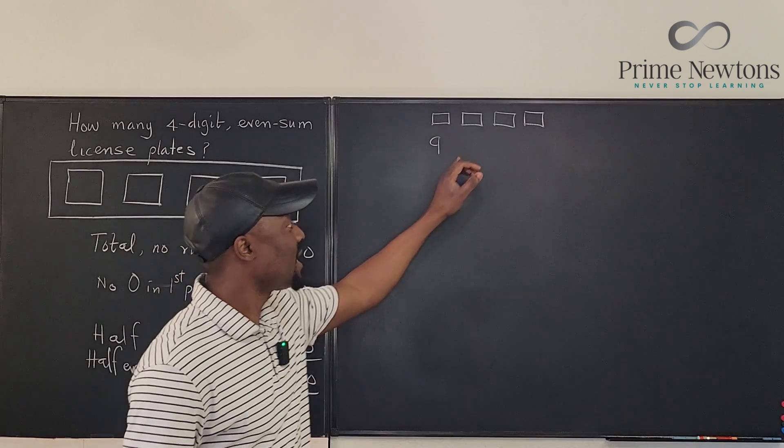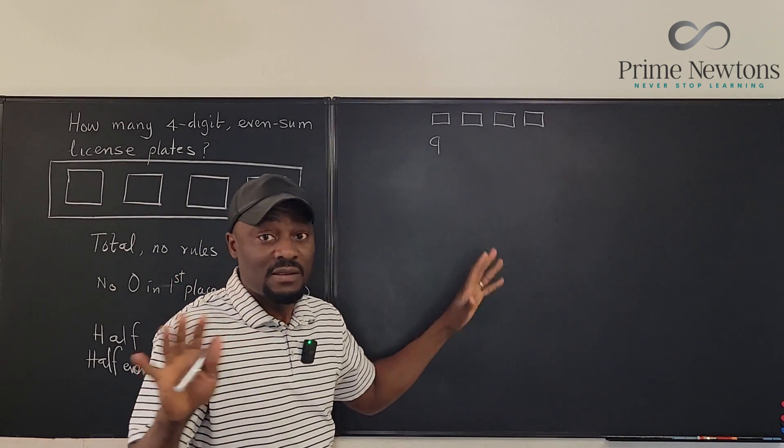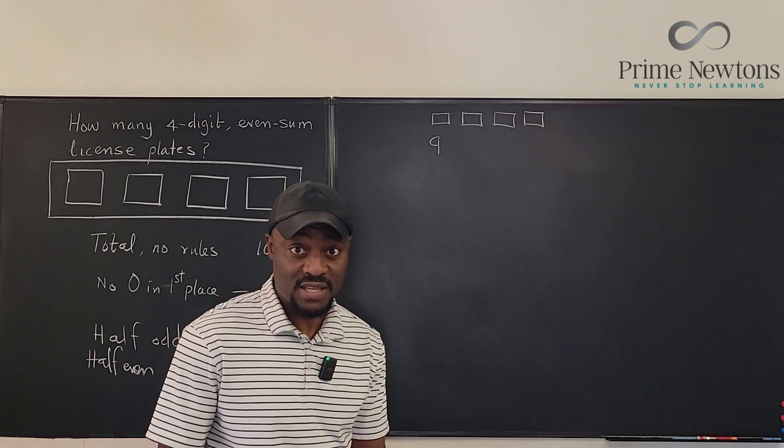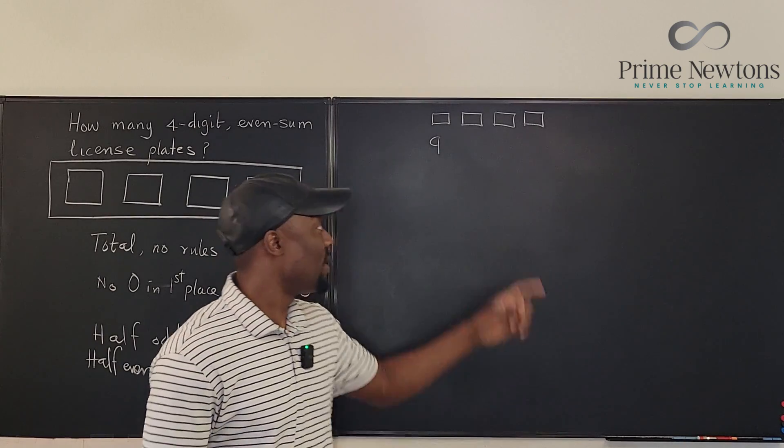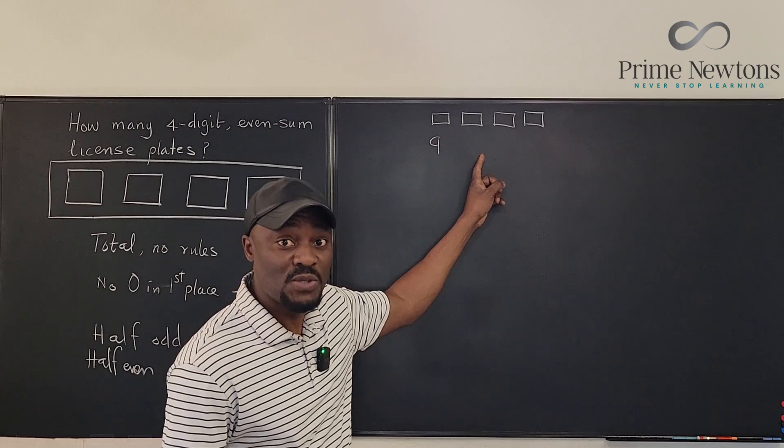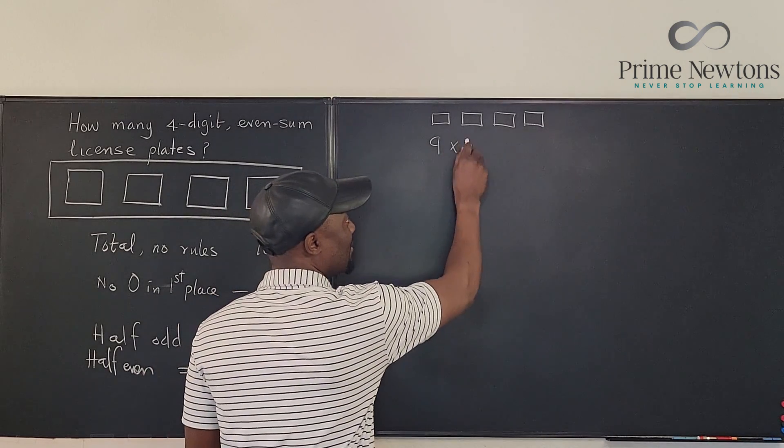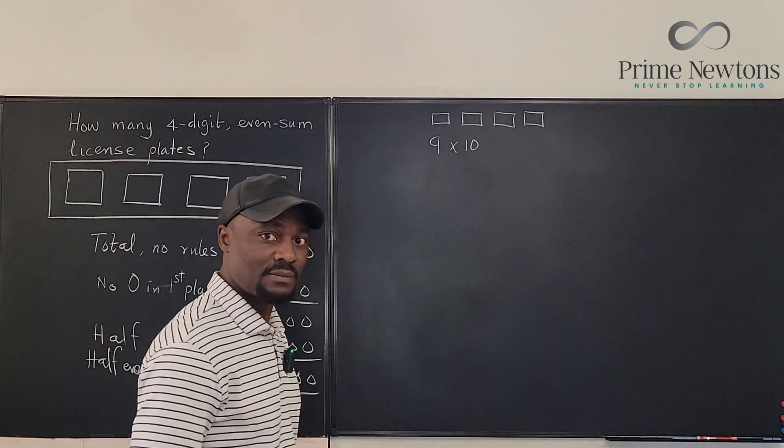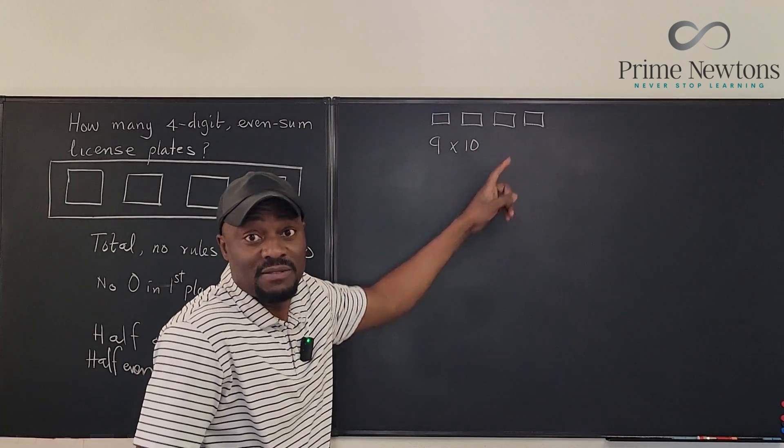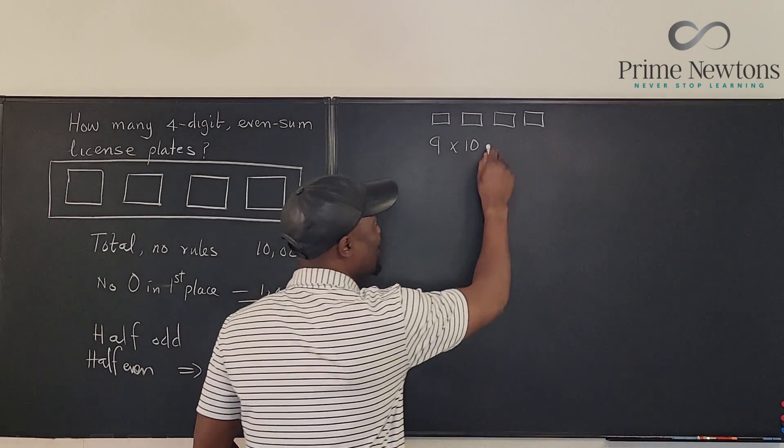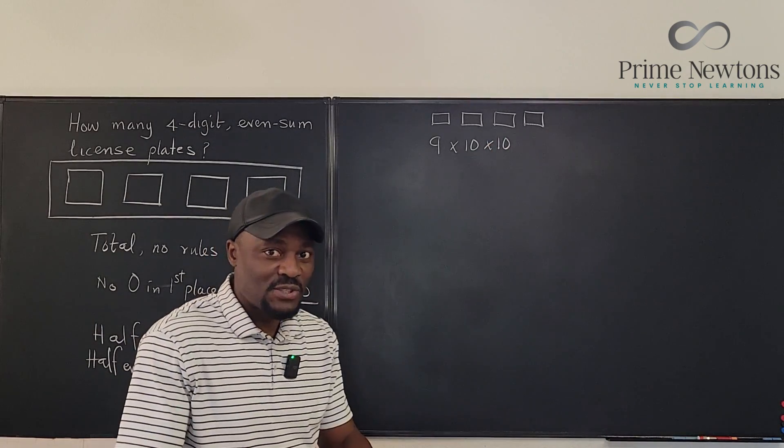Now I'm going to go to the second digit. Nothing about the second digit really calls for any attention. Anything can be there, and because there is repetition allowed, whatever number I've used here I can also use here. And I can also use 0. So I have 10 options. The same thing here. I have 10 options. No restrictions.